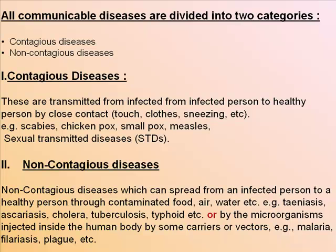Non-contagious diseases can spread from an infected person to a healthy person through contaminated food, air, water, etc. Examples include taeniasis, ascariasis, cholera, tuberculosis, and typhoid. They can also spread by microorganisms injected inside the human body by carriers or vectors — for example, malaria, filariasis, and plague.